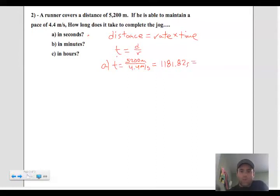And we always want to make sure that we take into account significant figures. 5200 has two significant figures. 4.4 has two significant figures. So we want to make sure our answer has two significant figures. So it should be 1200 seconds. That's the answer to part A.